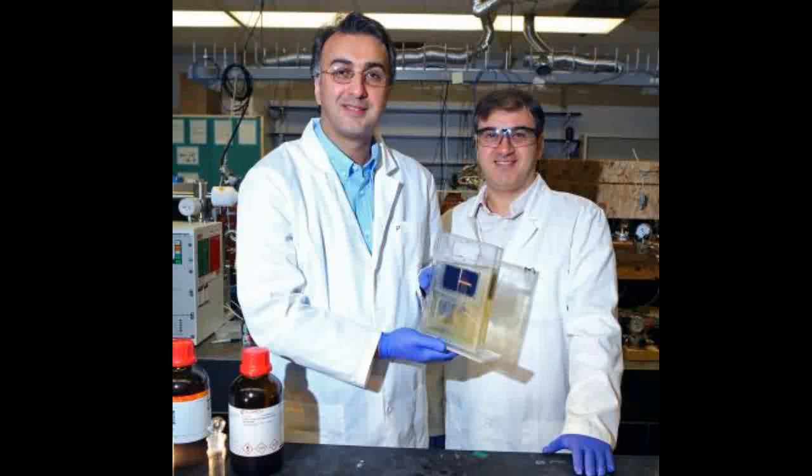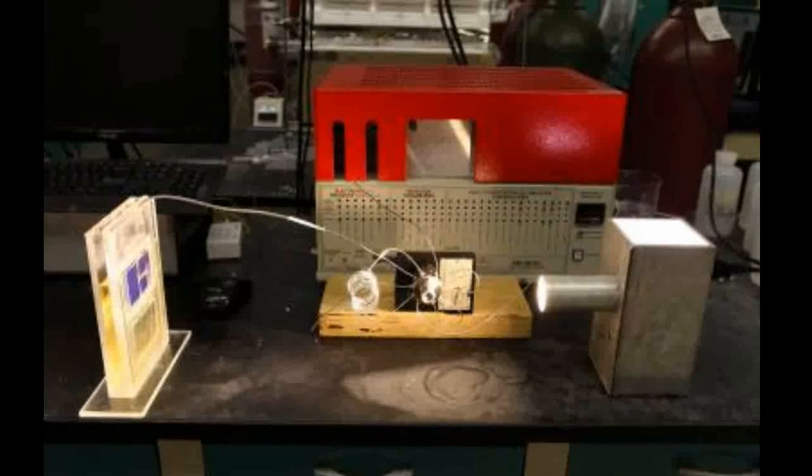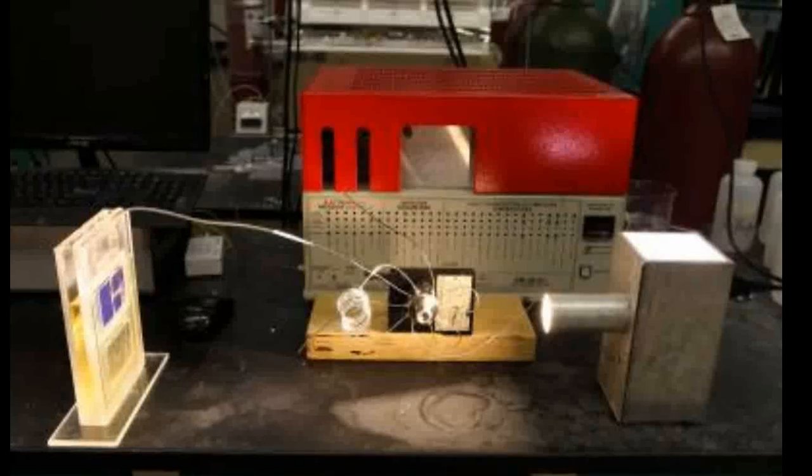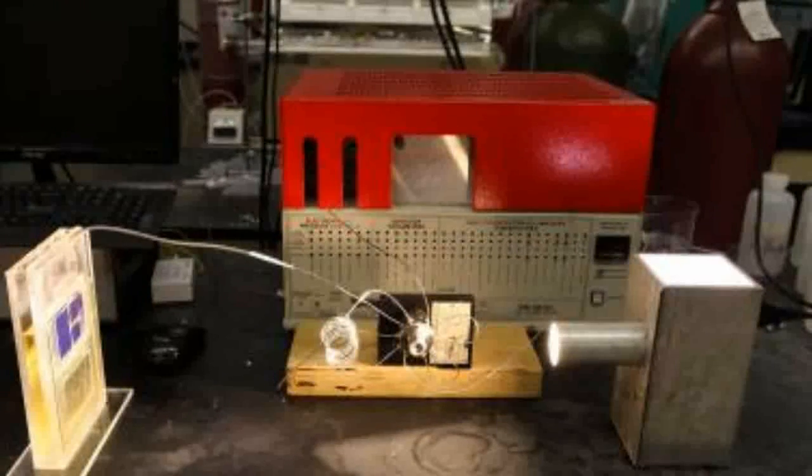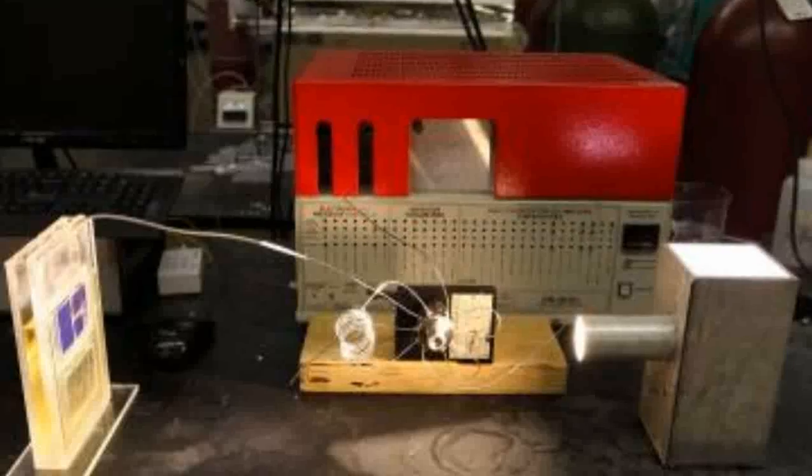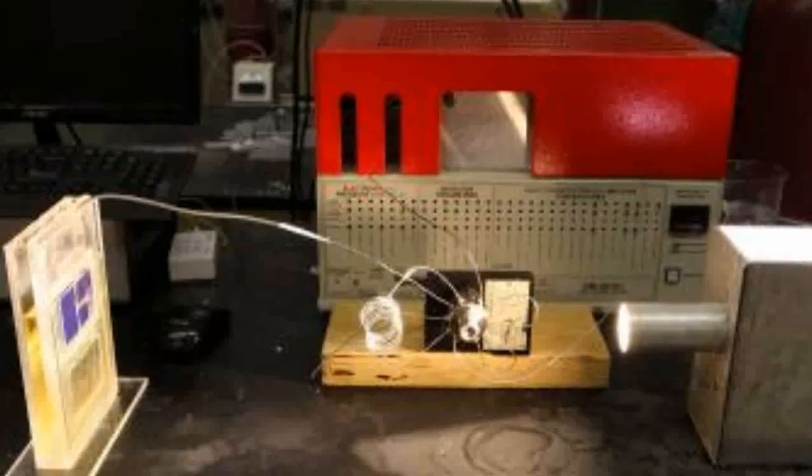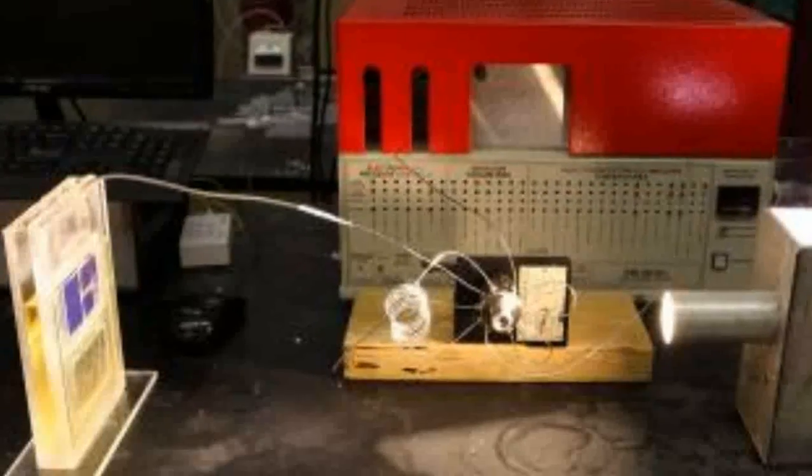The UIC artificial leaf consists of two silicon triple junction photovoltaic cells of 18 square centimeters to harvest light, the tungsten diselenide and ionic liquid co-catalyst system on the cathode side, and cobalt oxide in potassium phosphate electrolyte on the anode side.